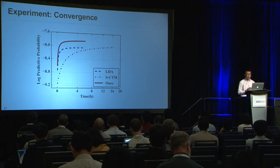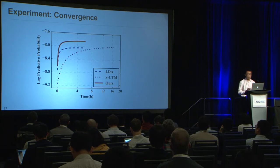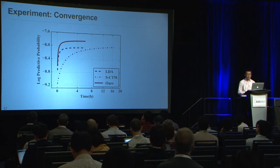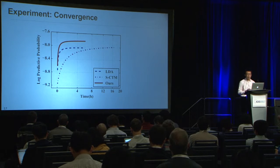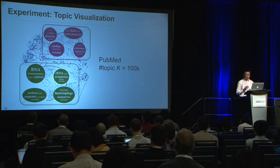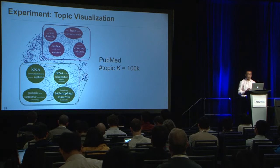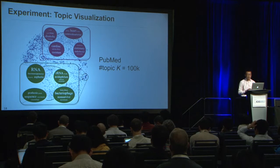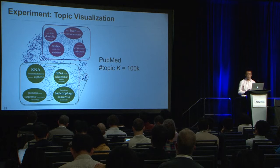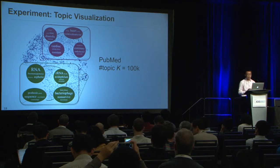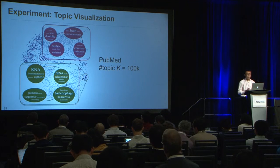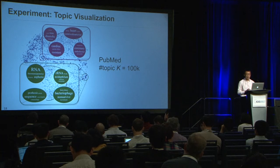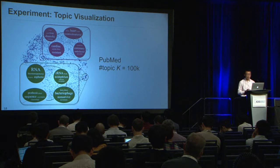In addition to total running time, we also evaluate convergence properties as a measure of scalability. This figure shows convergence curves on the New York Times dataset with 1,000 topics. Using similar time, our model converges to a better point than LDA does, while SCTM is much slower, failing to reach convergence within the time frame. We finally evaluate topic visualization performance. This figure shows 100,000 topic embeddings and their correlations on the PubMed dataset. Related topics are close to each other in the embedding space, revealing diverse sub-structures of themes in the collection. Our model discovers very meaningful structures, providing insights into the semantics underlying large text corpora and facilitating understanding of the large collection of topics.